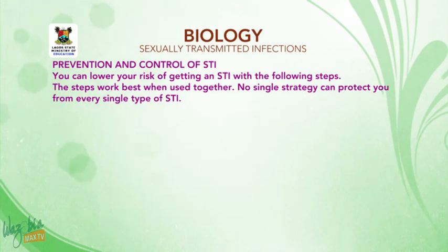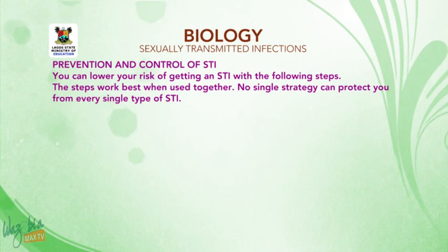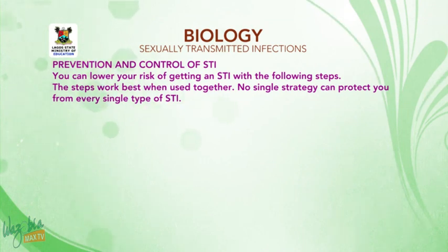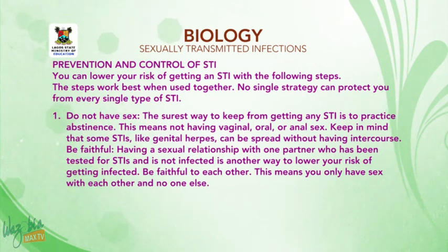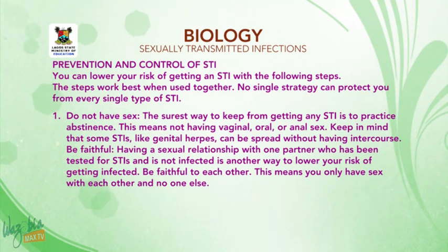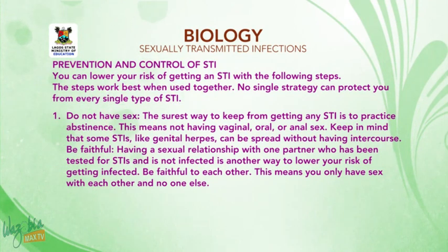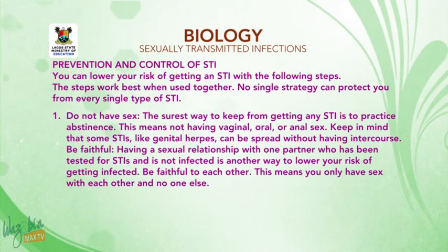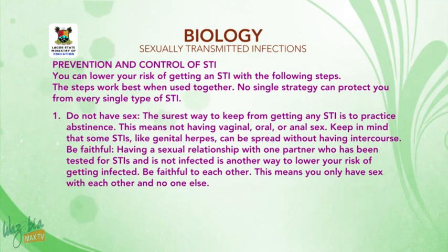Prevention and control of STIs: you can lower your risk of getting an STI with the following steps, which work best when used together — no single strategy can protect you from every type of STI. Number one: do not have sex. The surest way to avoid any STI is to practice abstinence — not having vaginal, oral, or anal sex. Keep in mind that some STIs like genital herpes can be spread without having intercourse. Be faithful: having a sexual relationship with one tested, uninfected partner lowers your risk. This means you only have sex with each other and no one else.